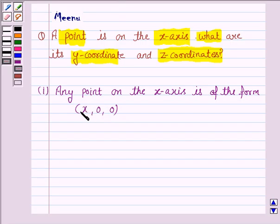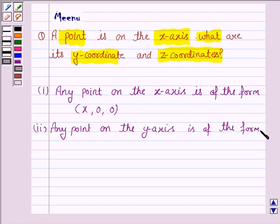Similarly, any point on the y-axis is of the form (0, y, 0). That is, x and z-coordinates are 0, and y is the distance of this point on the y-axis.